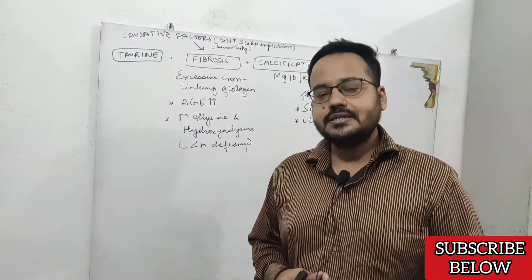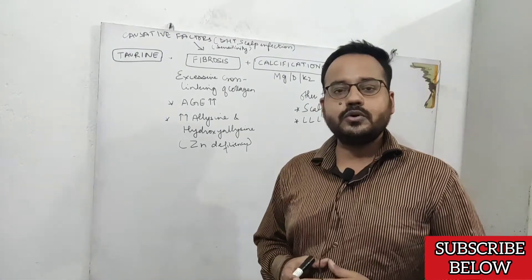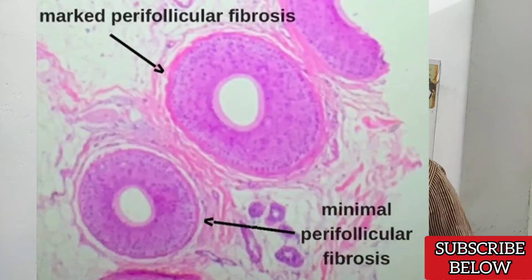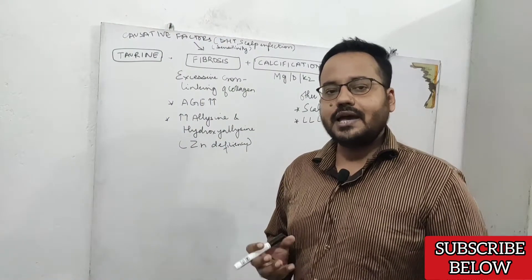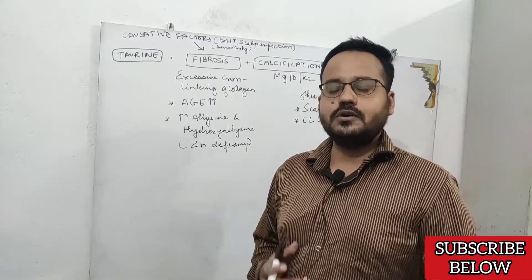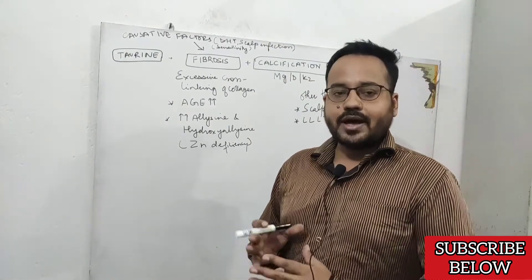Two important factors that can lead to decreased availability of oxygen at the root of your hair follicle are fibrosis and calcification. Fibrosis around the follicle, also called perifollicular fibrosis, can result in shrinkage of your hair follicle and lead to decreased availability of oxygen and increased chance of hair fall and hair thinning.